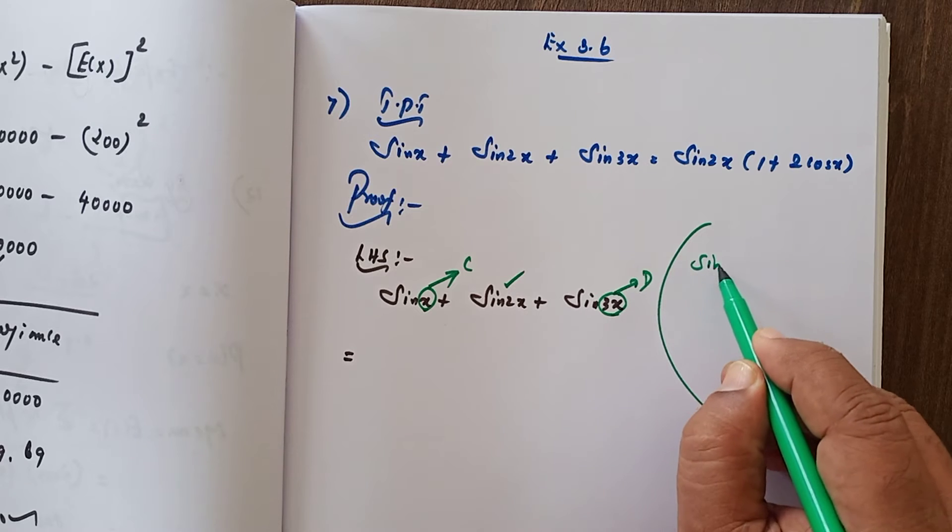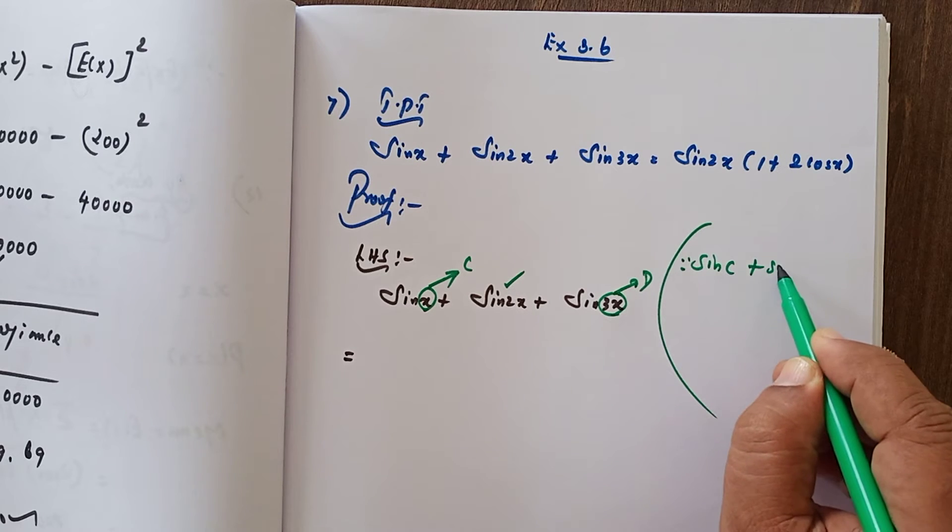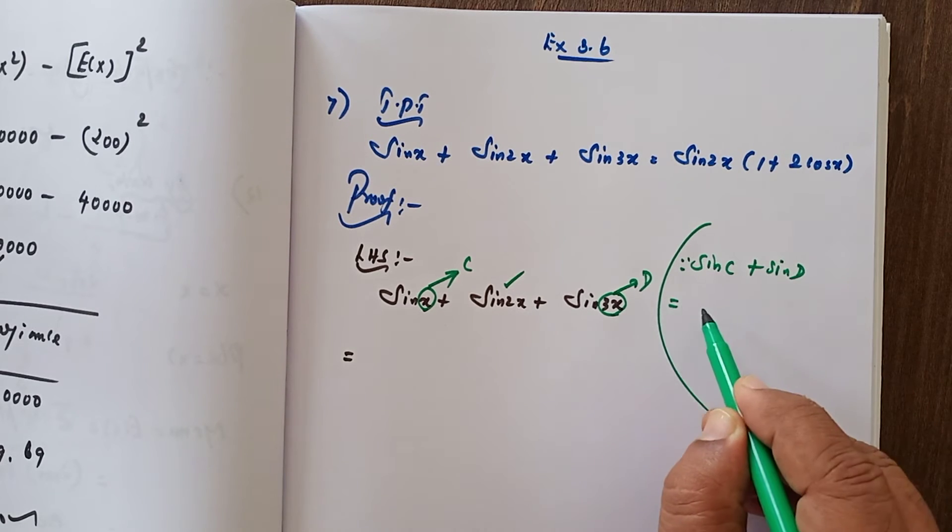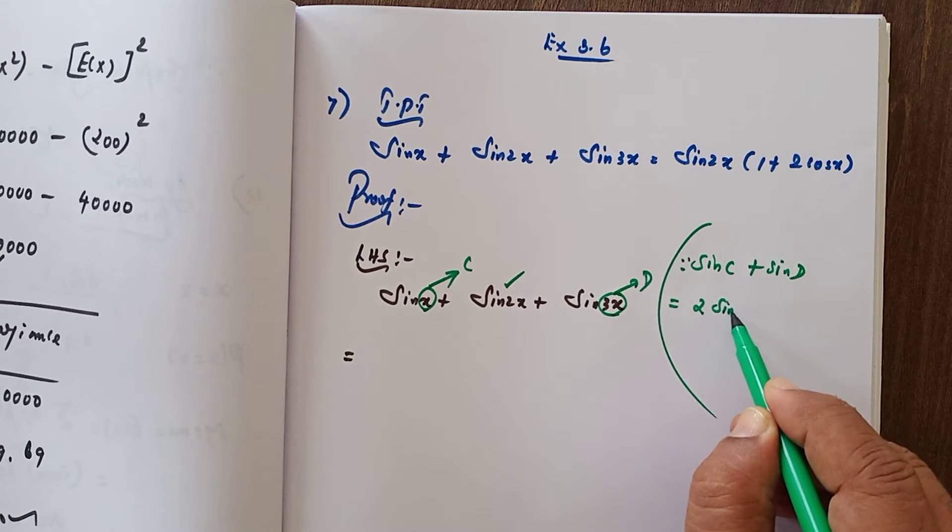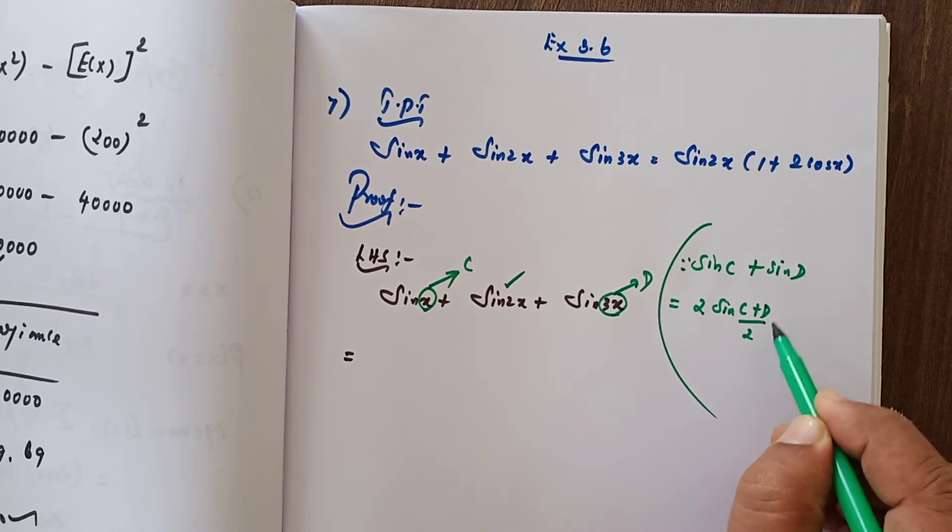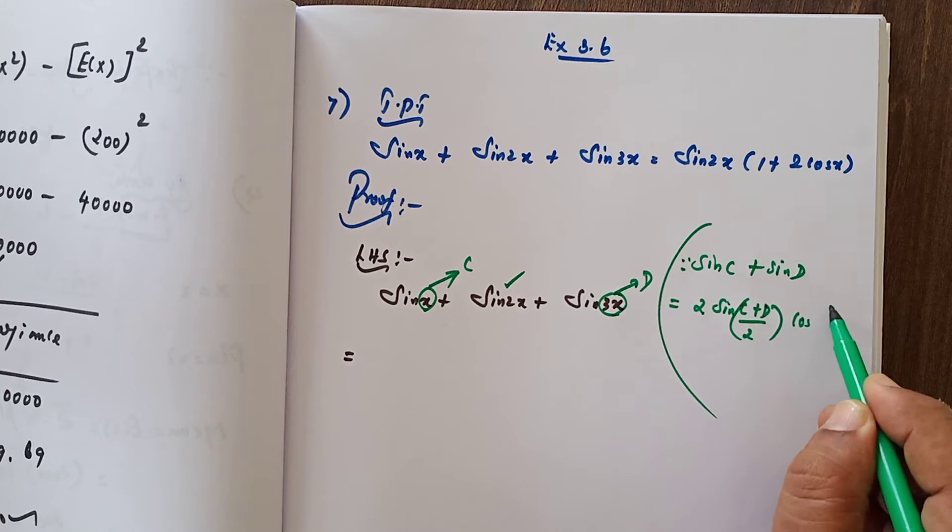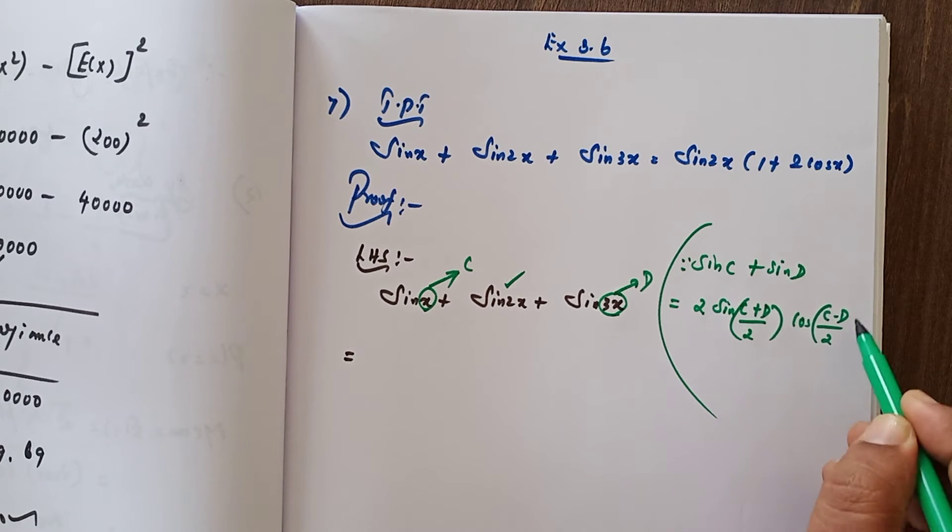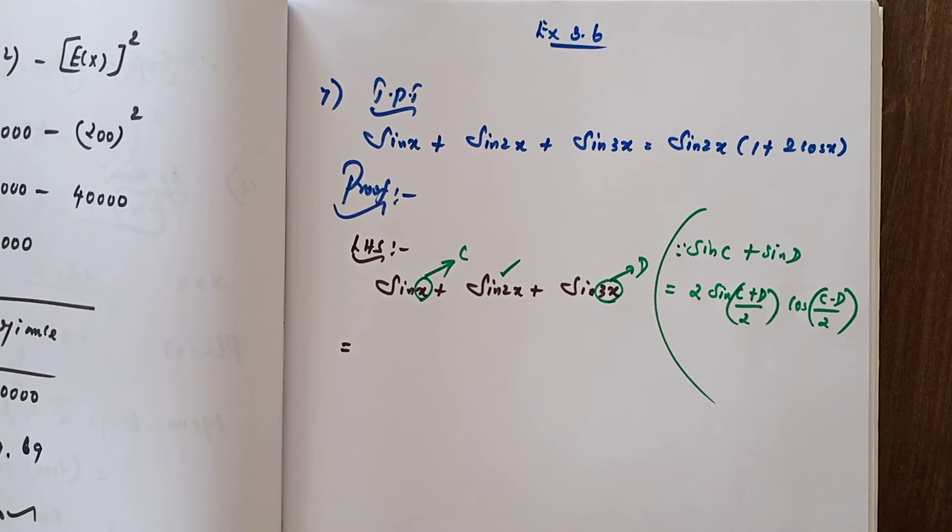Sin c plus sin d is equal to 2 sin of c plus d by 2 into cos of c minus d by 2. Here c is equal to x and d is equal to 3x.